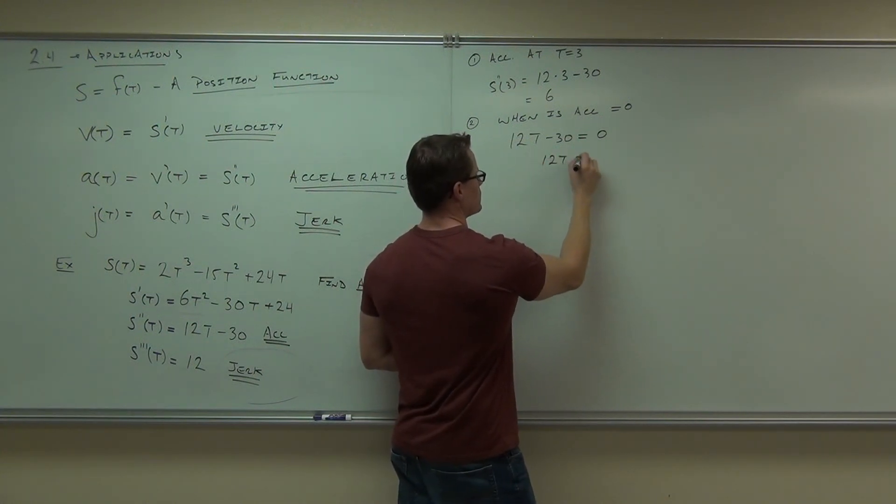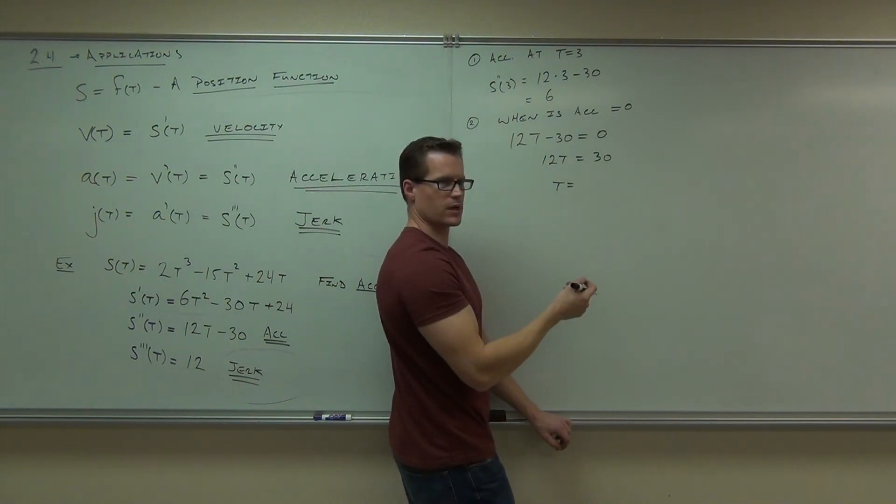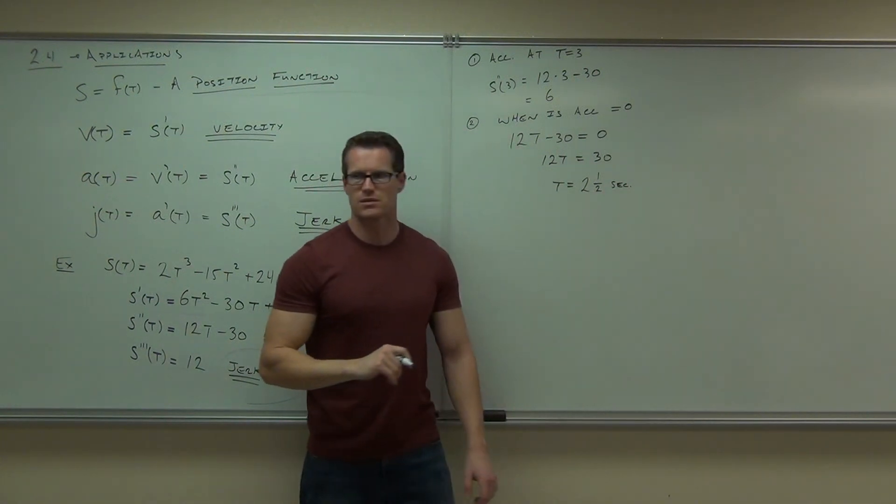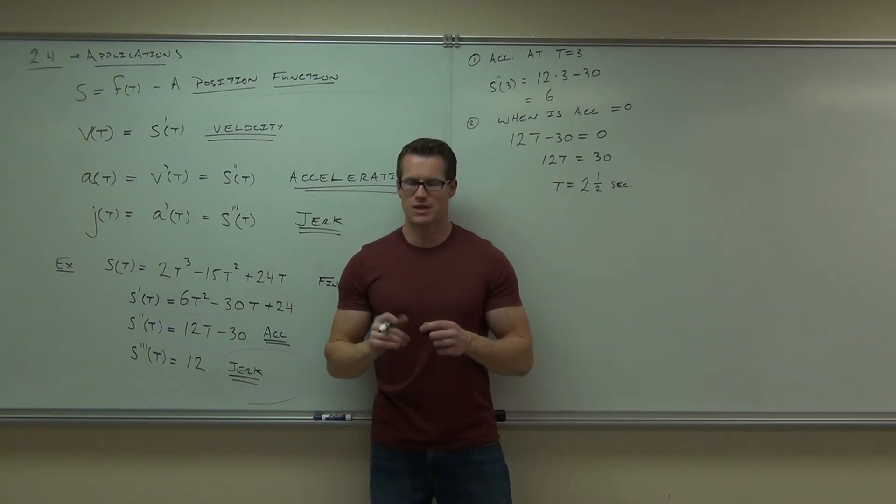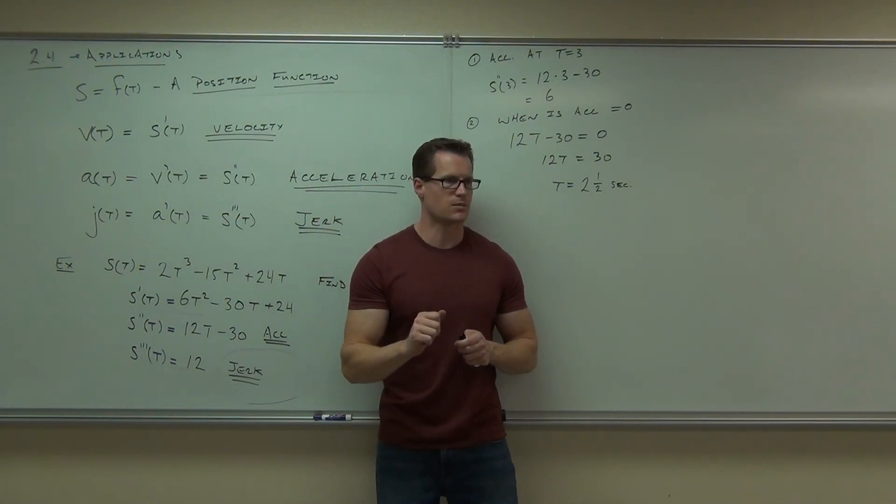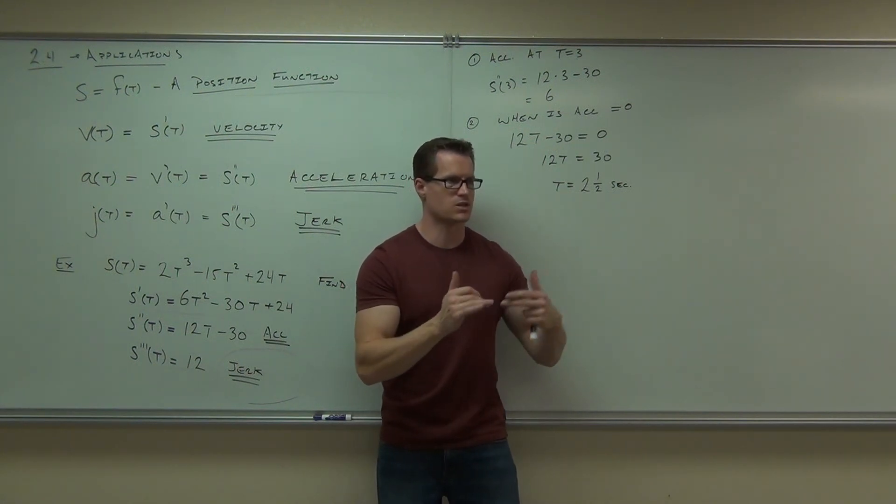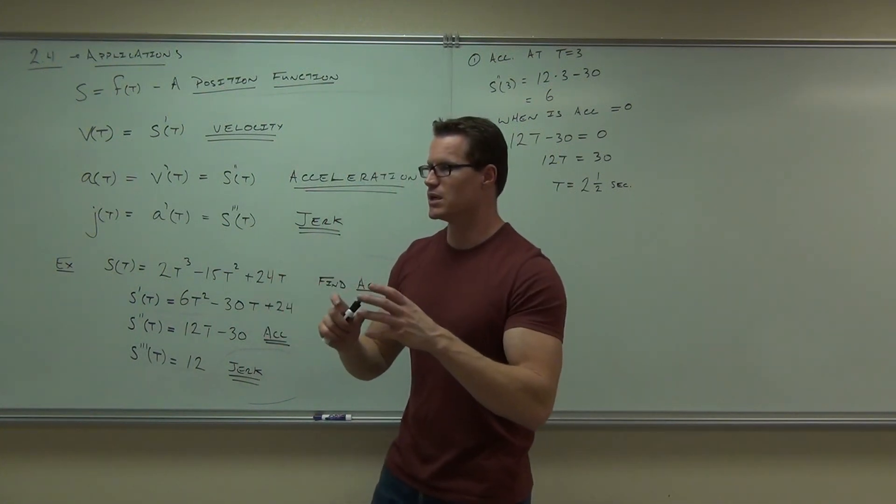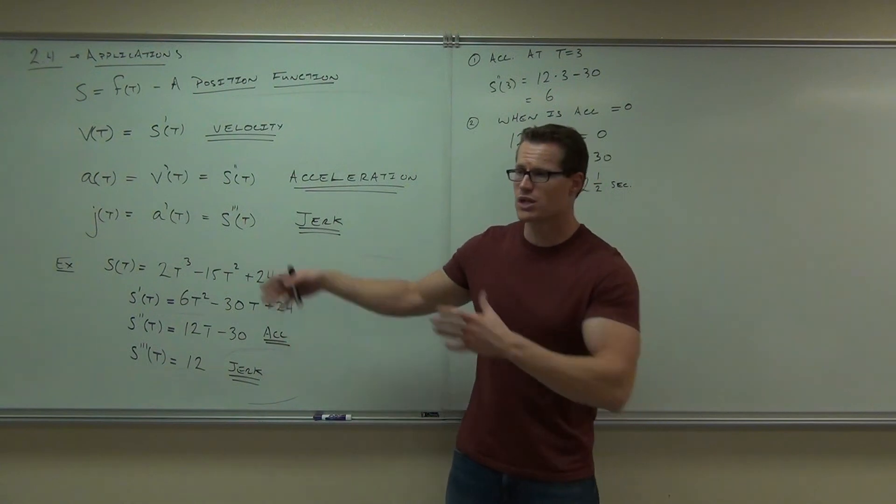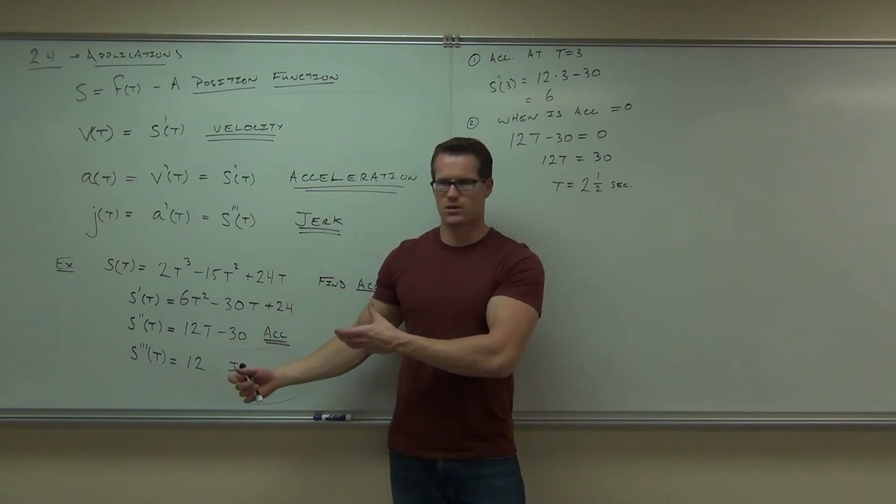In that case, you take your 12t minus 30, set that equal to zero. If we add 30 and divide by 12, we get two and a half. Two and a half seconds. So at two and a half seconds, our acceleration is zero. What happens is we either temporarily stop accelerating for a second and continue, or we change our velocity from increase to decrease. We'll talk about our velocity could change from increasing at an increasing rate to increasing at a decreasing rate. We're going to get more into the interplay between first and second derivative in chapter three, where we're actually going to be graphing these using this information.